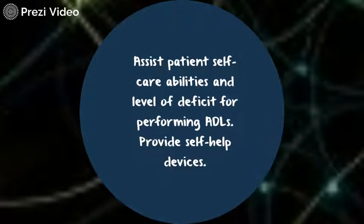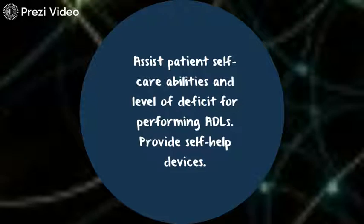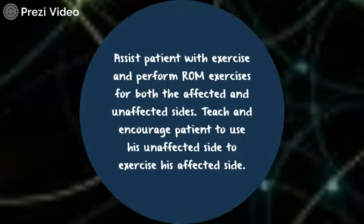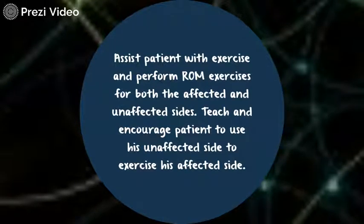Assist with the patient's self-care abilities and level of deficit for performing ADLs. Provide self-help devices such as extensions with hooks, toilet risers, long-handled brushes, drinking straws, leg bags for catheter, or shower chairs. Next, assist the patient with exercise and perform range-of-motion exercises for both the affected and unaffected sides. Teach the patient to use the unaffected side to exercise the affected side.